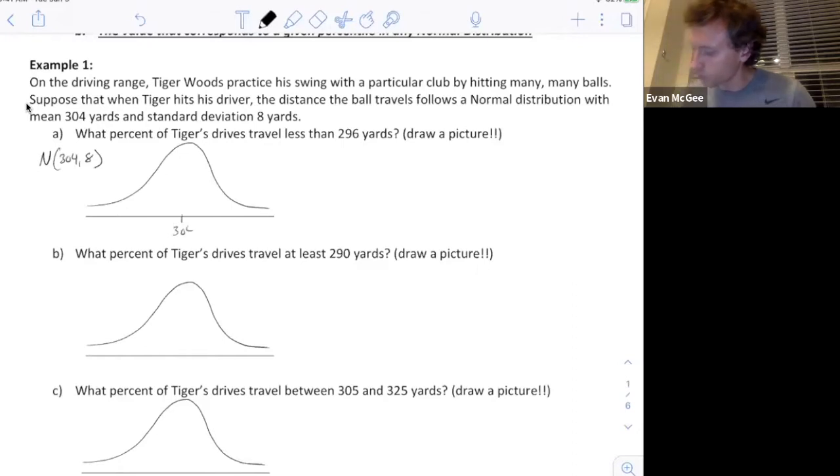The mean will be here in the center at 304. If we subtract one standard deviation, 304 minus 8, that takes us to 296 yards. Based on the previous video, we should know what proportion is between negative 1 and positive 1 standard deviation, and it should be 68%. If 68 is in the middle, that means we have 100 minus 68 left over evenly split on the opposite sides. 100 minus 68 is 32, which leaves 16% below. That is the shaded region we're looking for. That's the way we've learned it using the 68, 95, 99.7 rule.